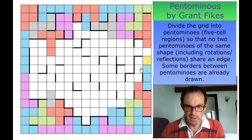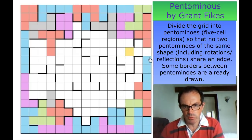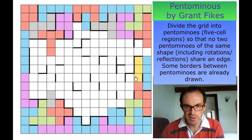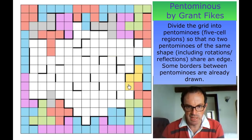It mustn't isolate squares so this has got to come up again. Is this an I pentomino? No, if this is an I pentomino, this would have to be an N pentomino that connects to the other one. So in order to not isolate a square, this is an L pentomino. These squares now have to be part of the same pentomino.